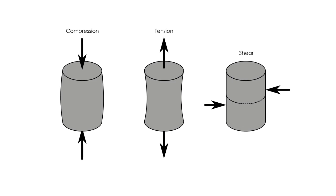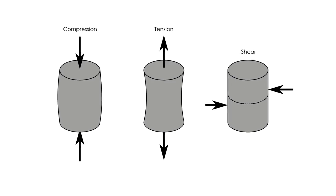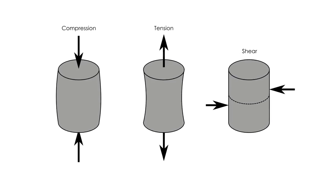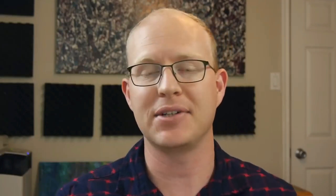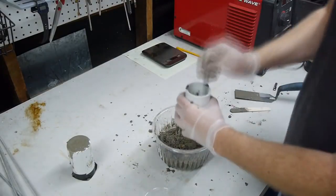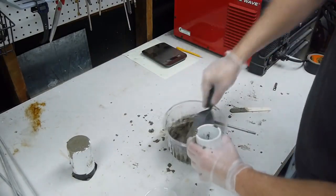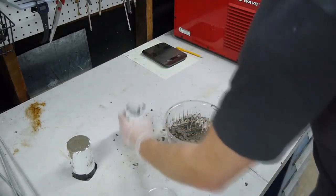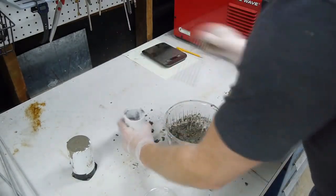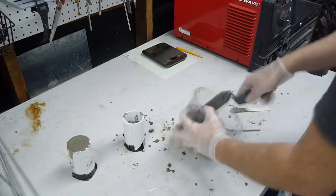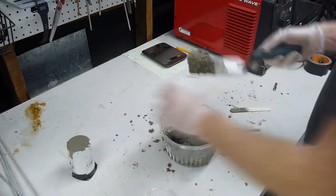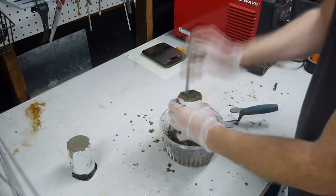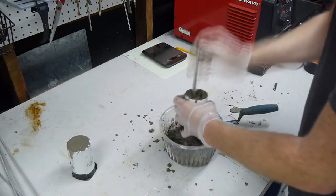Not all materials can resist each type of stress equally. It turns out that concrete is very strong in compression and weak in tension. But you don't have to take my word for it — here's a demonstration. These two concrete cylinders were cast from the exact same batch, and we'll see just how much load they can withstand before failure.